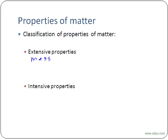Other types of extensive properties are things like volume, and even temperature. They are things which, for the particular substance you're talking about, change depending on how much you have. So that's an example of types of extensive properties.